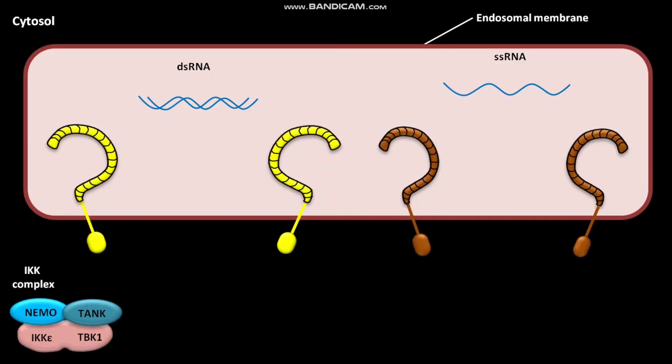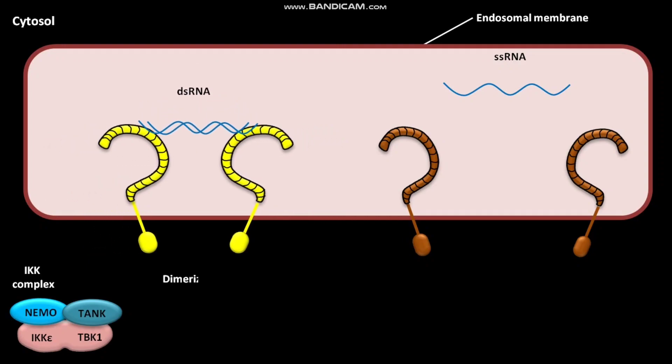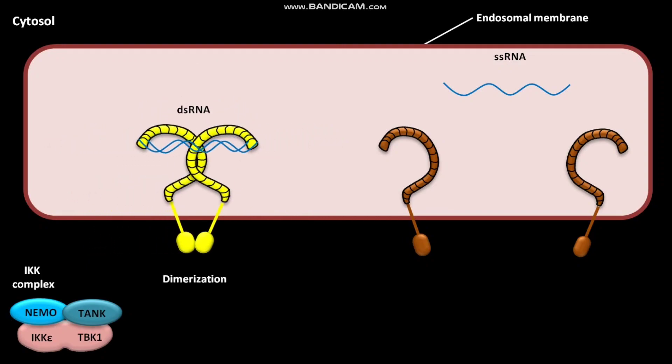The endosomal membrane has TLR3. TLR3 binds viral dsRNA. Due to the binding of viral dsRNA, TLR3 receptors undergo dimerization.